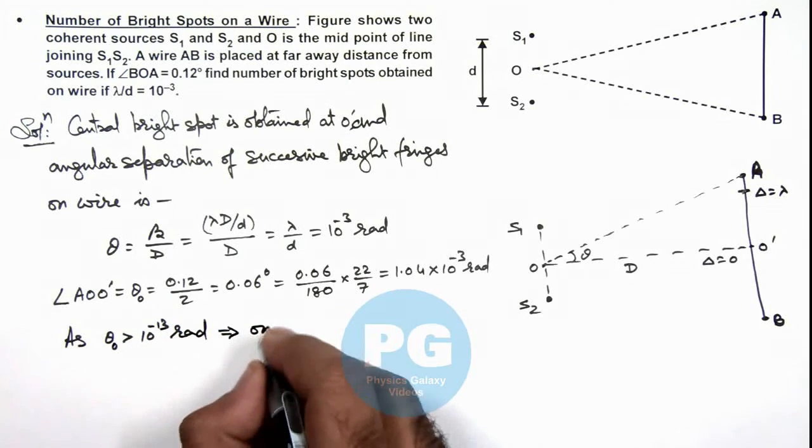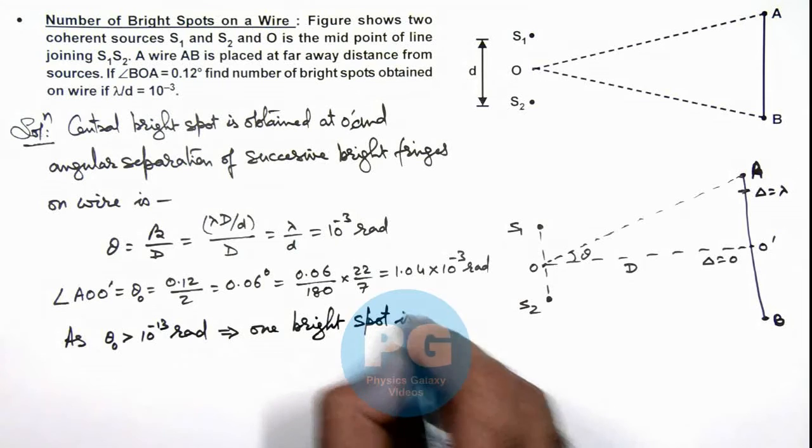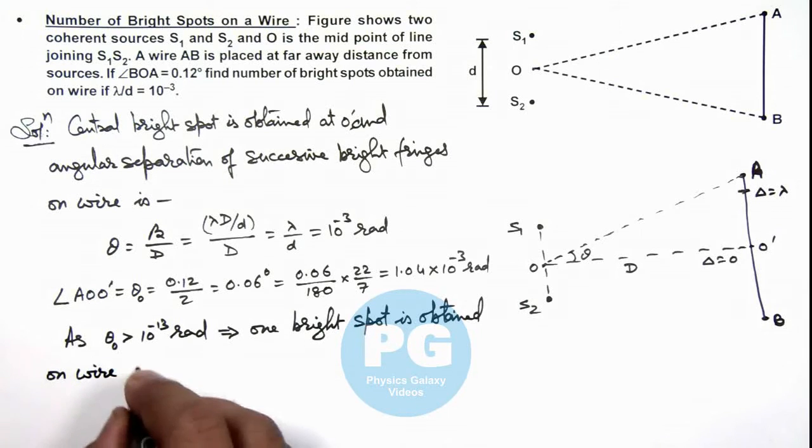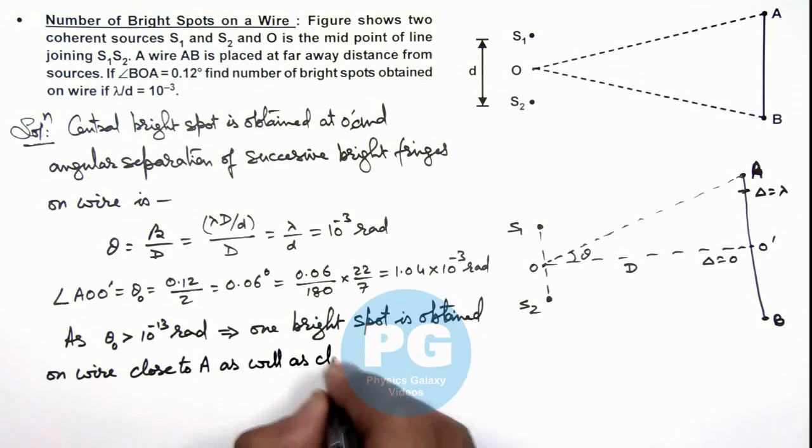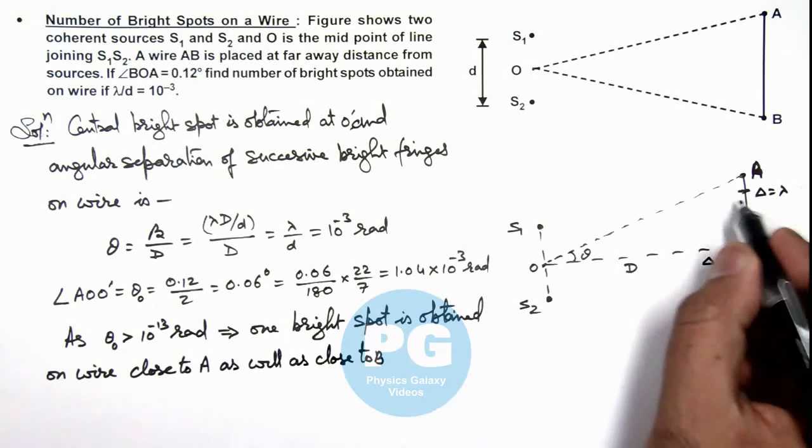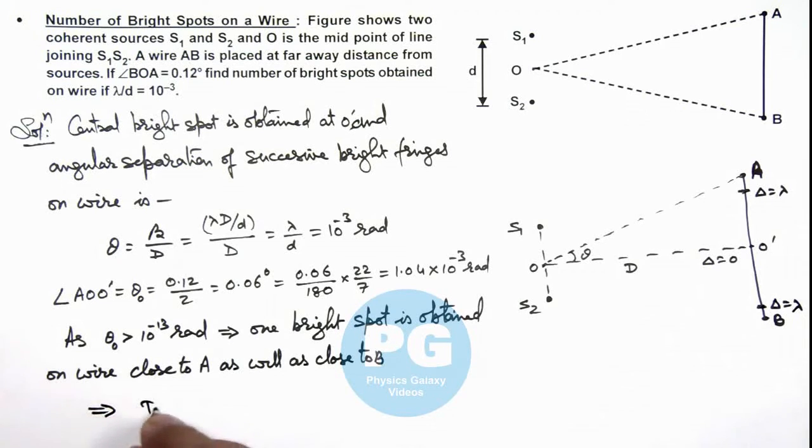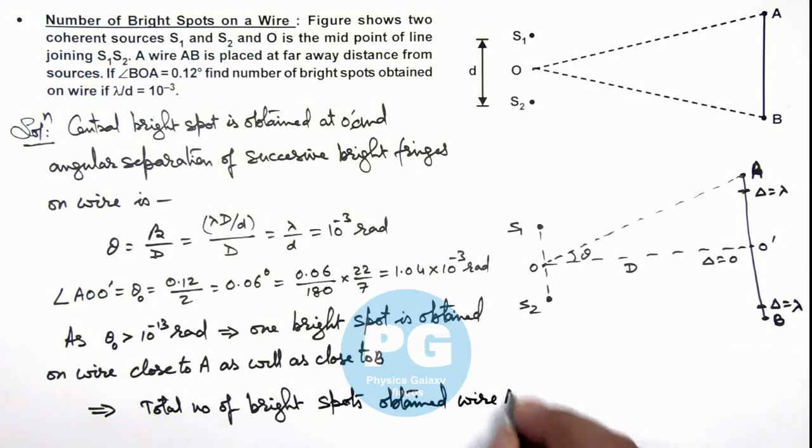This implies one bright spot is obtained on wire close to A as well as close to B, because by symmetry we can say here also path difference will be λ. So this implies total number of bright spots obtained on wire AB are 3, and that is the result of this problem.